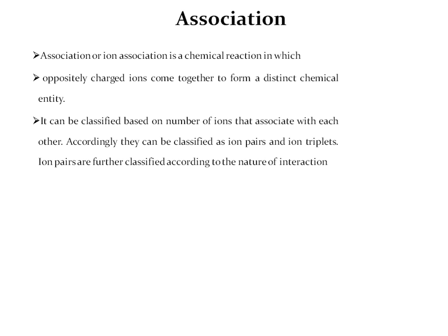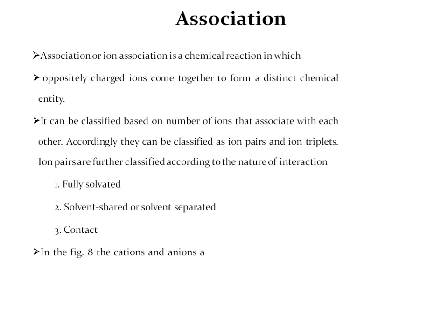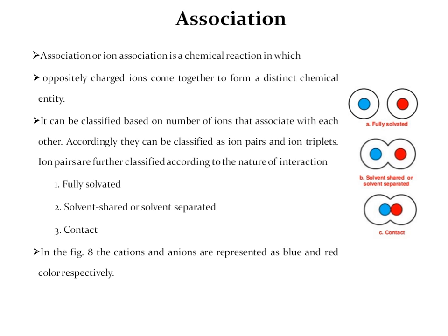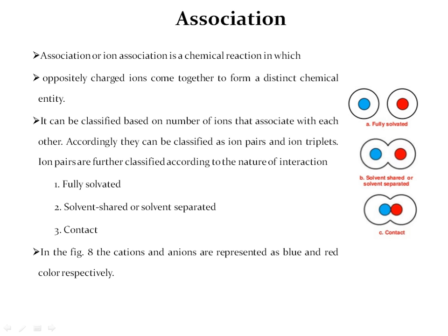Ion pairs are further classified according to the nature of interaction. First is fully solvated. Second is solvent shared or solvent separated. Third is contact. These are the three types of ion pairs.